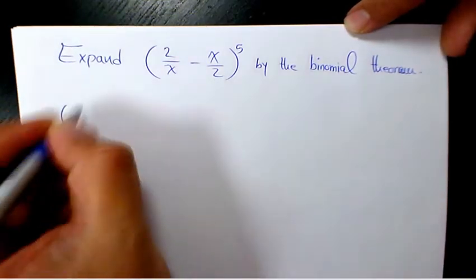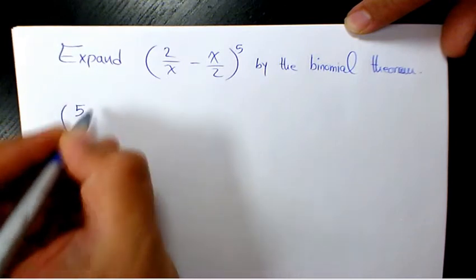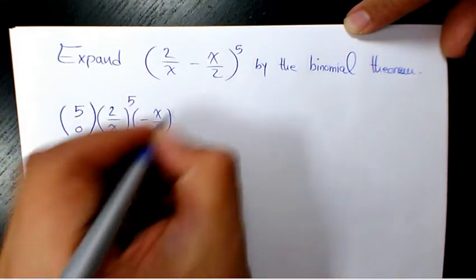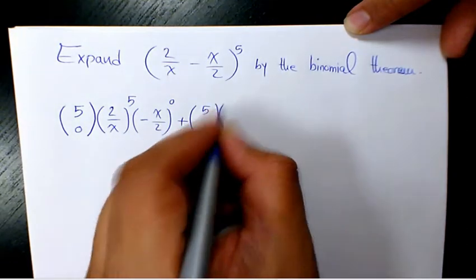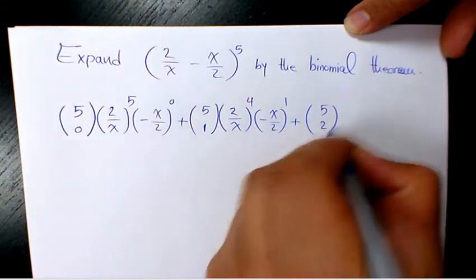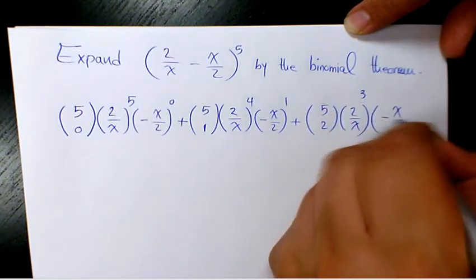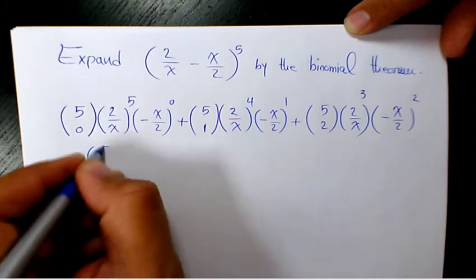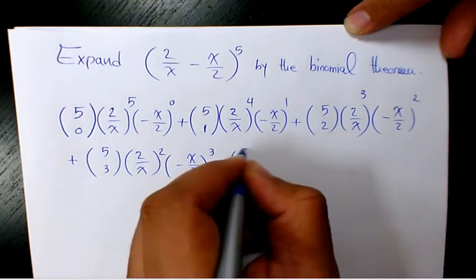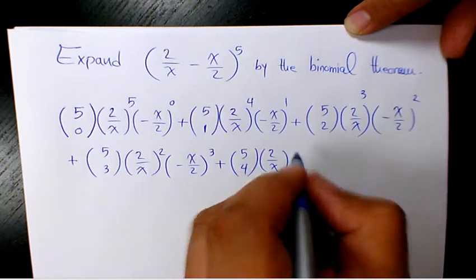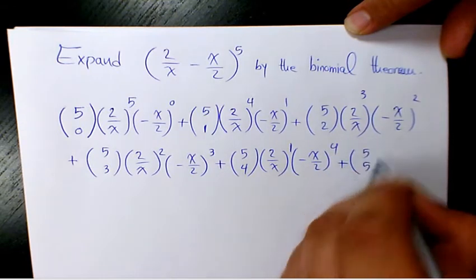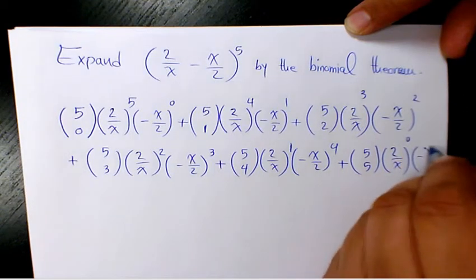we're going to have the index is 5, so we start with 5 choose 0 times 2 over x to the power of 5 times negative x over 2 to the power of 0, plus 5 choose 1 times 2 over x to the power of 4 times negative x over 2 to the power of 1, plus 5 choose 2 times 2 over x to the power of 3 times negative x over 2 to the power of 2, plus 5 choose 3 times 2 over x to the power of 2 times negative x over 2 to the power of 3, plus 5 choose 4 times 2 over x to the power of 1 times negative x over 2 to the power of 4, plus 5 choose 5 times 2 over x to the power of 0 times negative x over 2 to the power of 5.